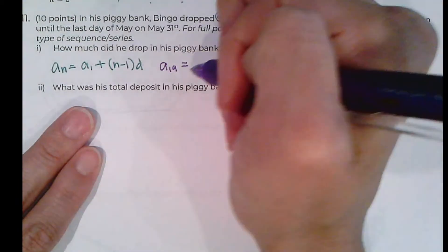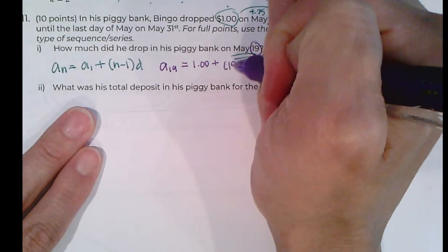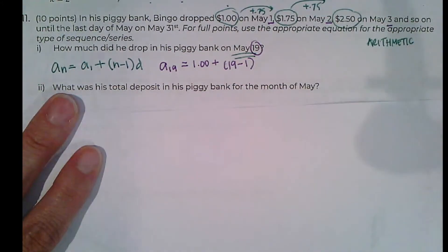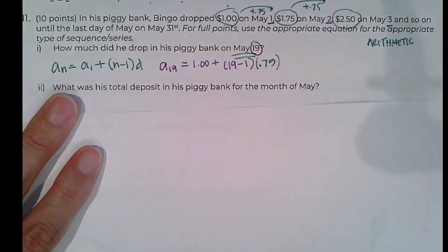A_1 is the first day, so that was $1. We're looking for 19 minus 1, and then our d, that's the amount that we added every single day, right? So 75 cents. So that's our equation. This is what we're going to be calculating.